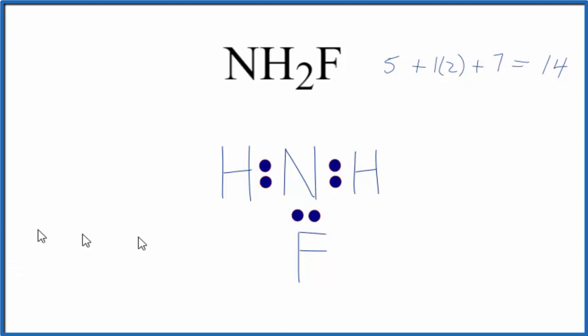Let's complete the octet on the fluorine. And at this point we've used 12 valence electrons. We can complete the octet on the nitrogen and we've used all 14 valence electrons.